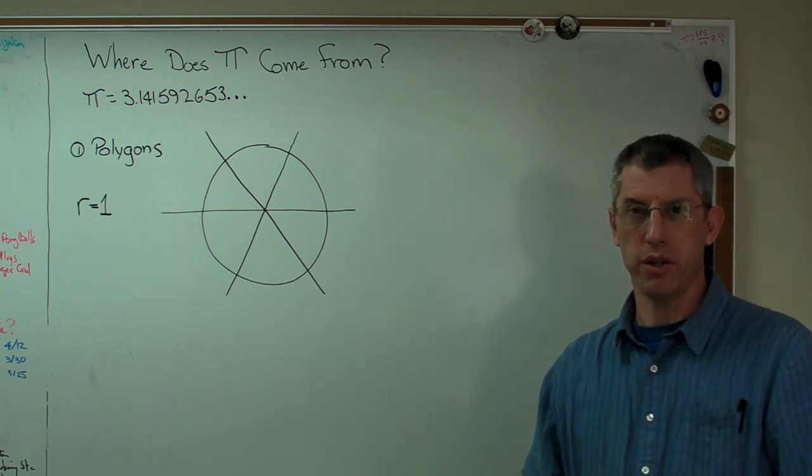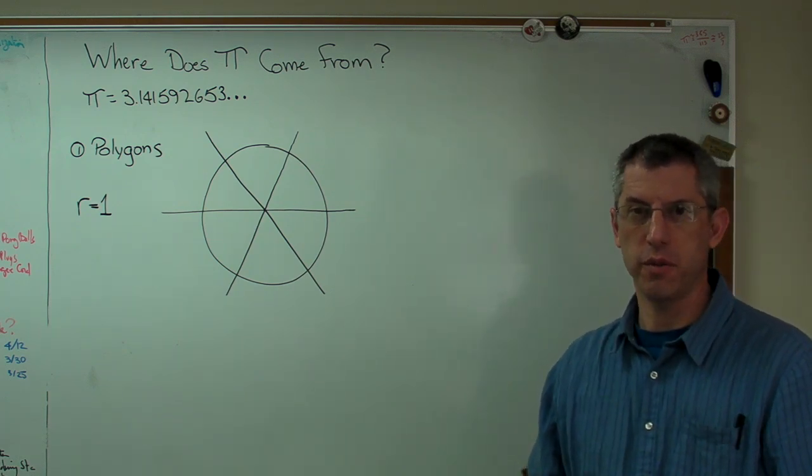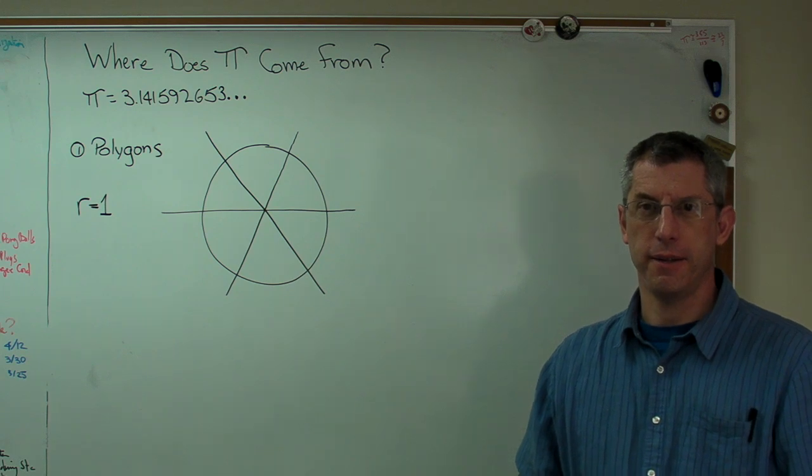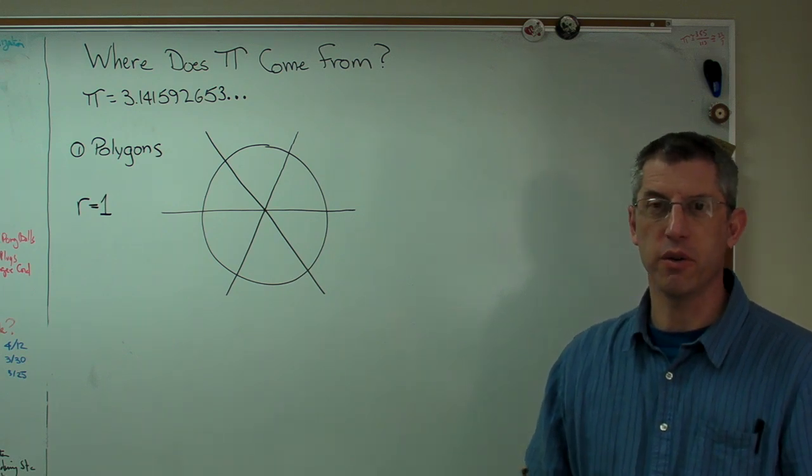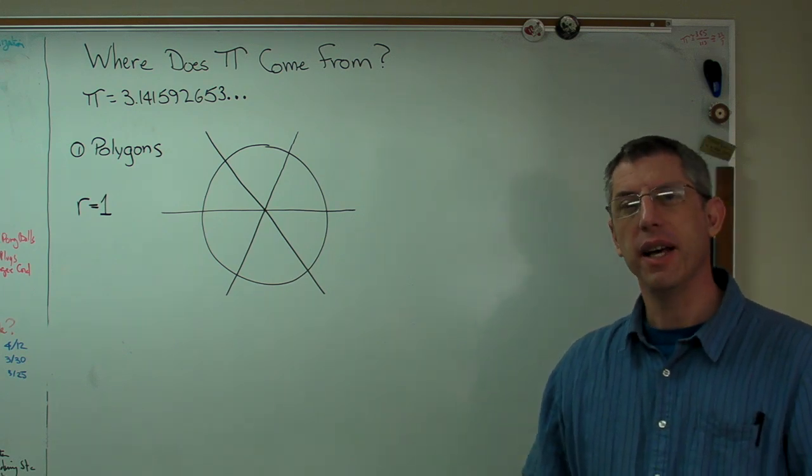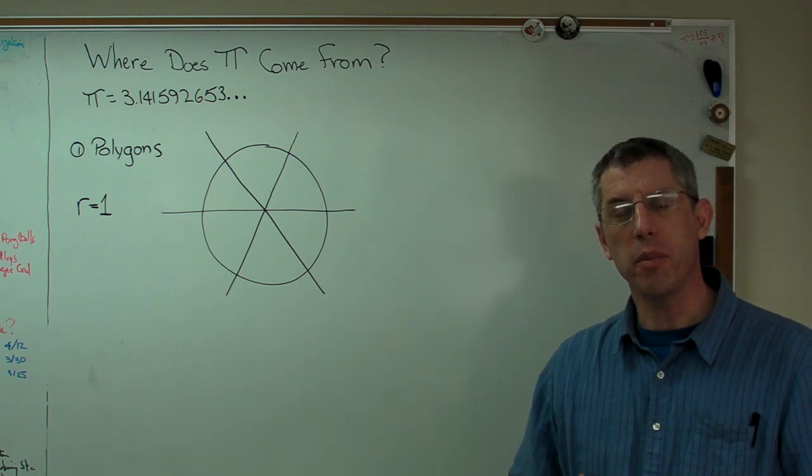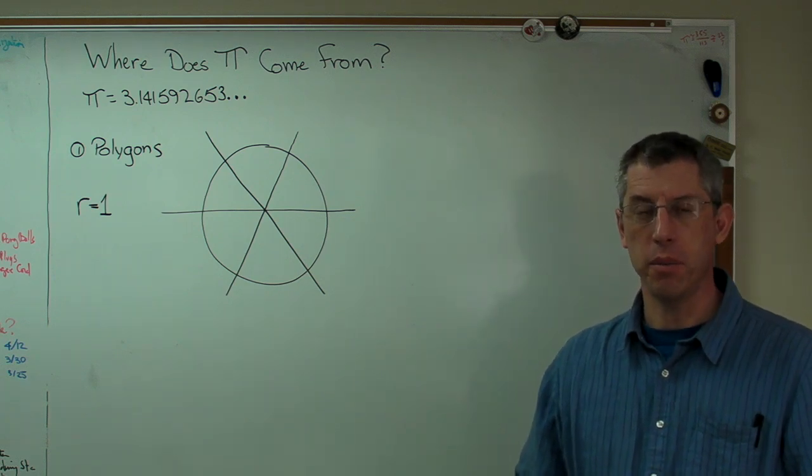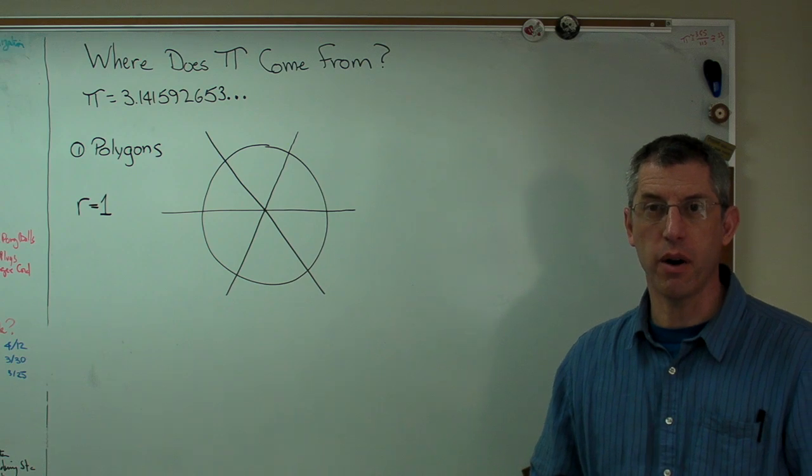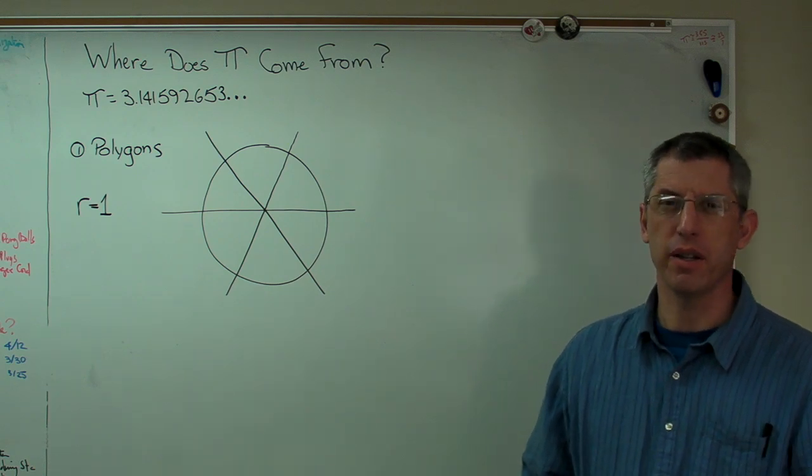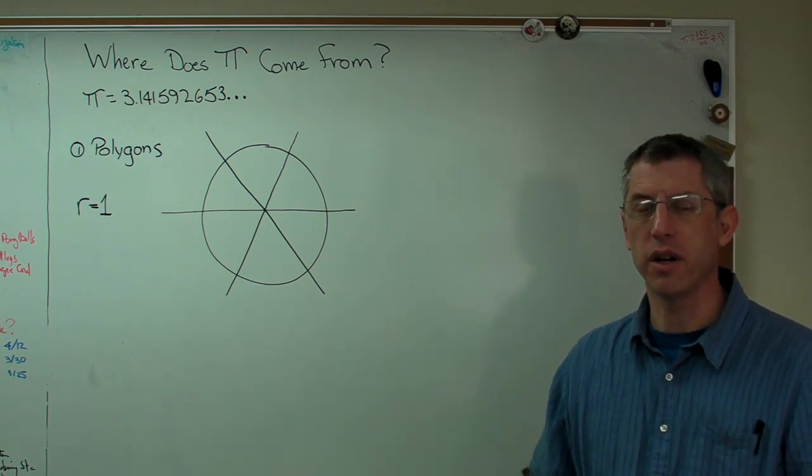You could do something like you could measure a circle, measure the circumference, and measure the diameter if you wanted, and take the ratio of the two, but that's not very accurate. So I thought it might be worth talking about how people have figured this out, figured this number out over the years. This is probably going to take more than one video, but we'll get started here.